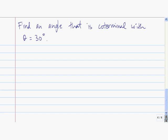Pause for a second and think about this problem: find an angle that is coterminal with the angle 30 degrees. There are infinitely many possibilities. One of them is the angle negative 330 degrees.